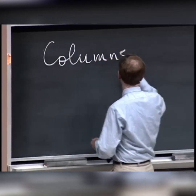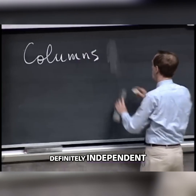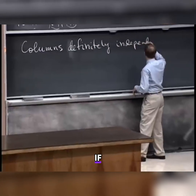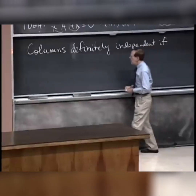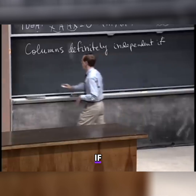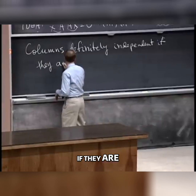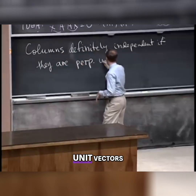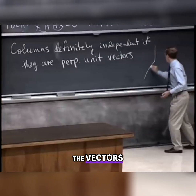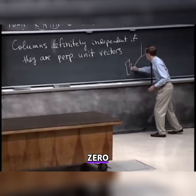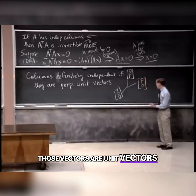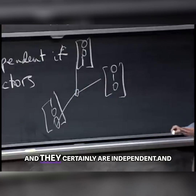Columns are certainly independent — definitely independent if they're perpendicular. I've got to rule out the zero column, so let me give them all length one so they can't be zero. If they are perpendicular unit vectors, like the vectors (1,0,0), (0,1,0), and (0,0,1), those vectors are unit vectors, they're perpendicular, and they certainly are independent.